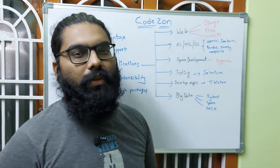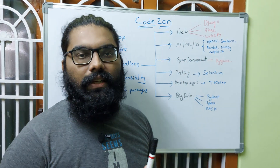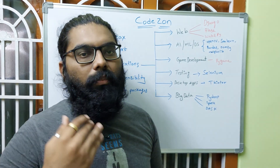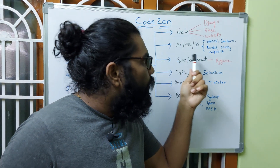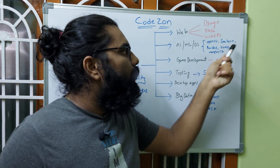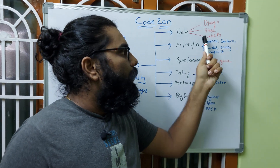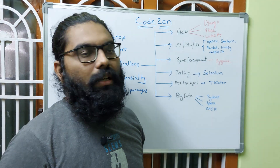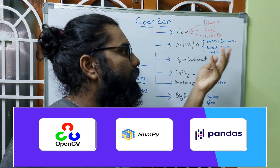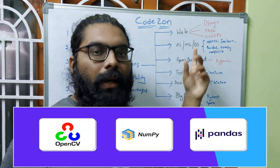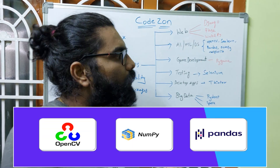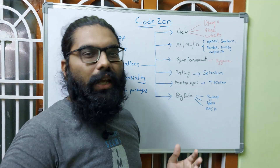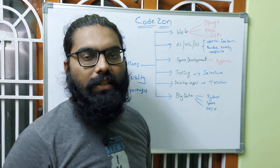If you don't want web development and instead want to get into data science, machine learning, or artificial intelligence, Python has very huge popularity and a lot of existing libraries for that. These libraries include OpenCV, Pandas, NumPy, and Matplotlib. These libraries are developed in Python and we now have hundreds and hundreds of them.